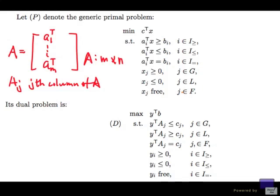So given this problem P up here, what are these sets? Well, these basically are the m constraints that we have. And so these i's, these sets i greater than or equal to, i less than or equal to, i equal, these sets form a partition of the set 1 up to m. And here down here, G, L, F, well, we have n variables. G, L, F form a partition of the set 1 up to n. And that's the notation.